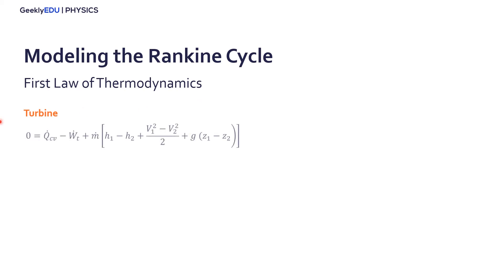If we apply the first law of thermodynamics, we have that the variation in internal energy for this case, we are in a steady state. Everything is steady. We're dealing with the ideal cycle. So this variation is zero.